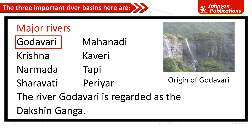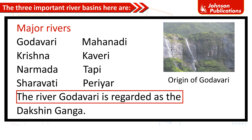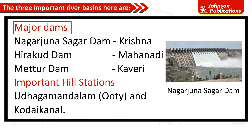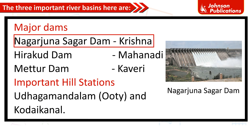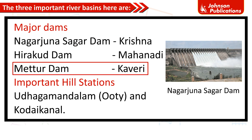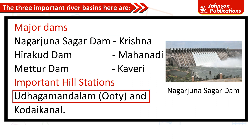Major rivers of the Deccan Plateau region include Godavari, Mahanadi, Krishna, Kaveri, Narmada, Tapi, Sharavati, and Periyar. The river Godavari is regarded as the Dakshina Ganga. Major dams include Nagarjuna Sagar Dam on Krishna, Hirakud Dam on Mahanadi, and Mettur Dam on Kaveri. Important hill stations in this region include Udhagamandalam, Ooty, and Kodaikanal.